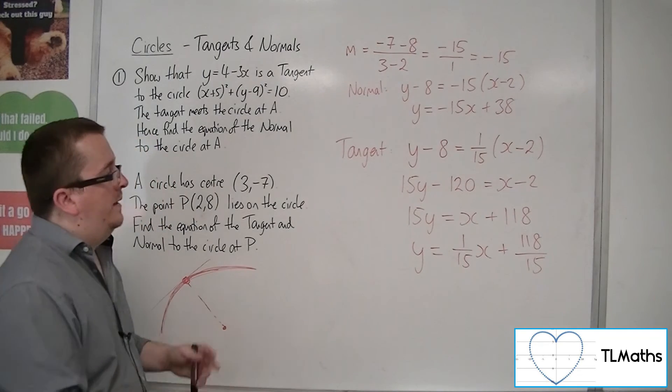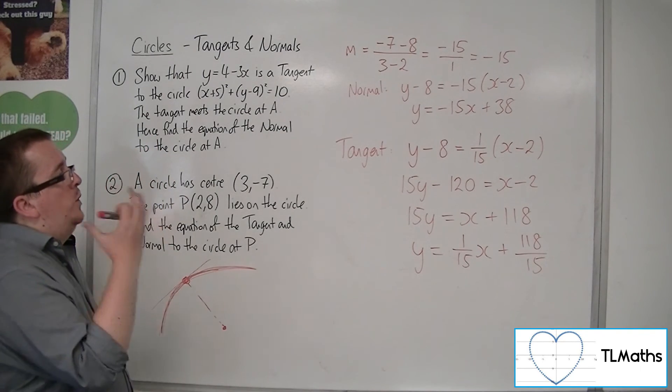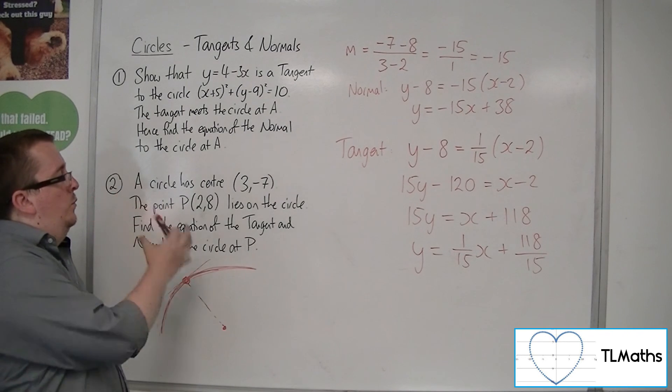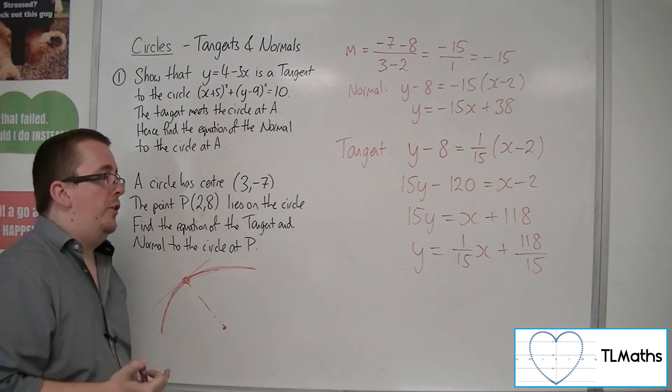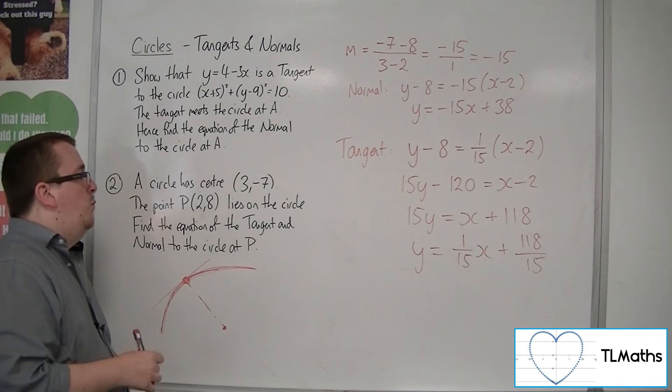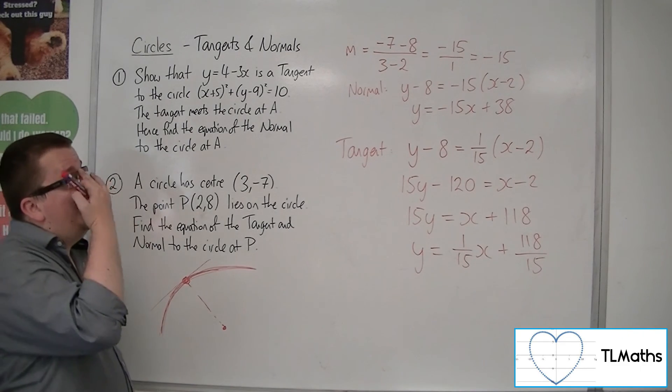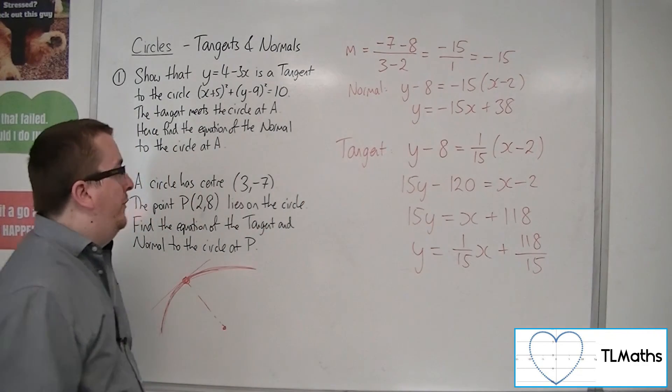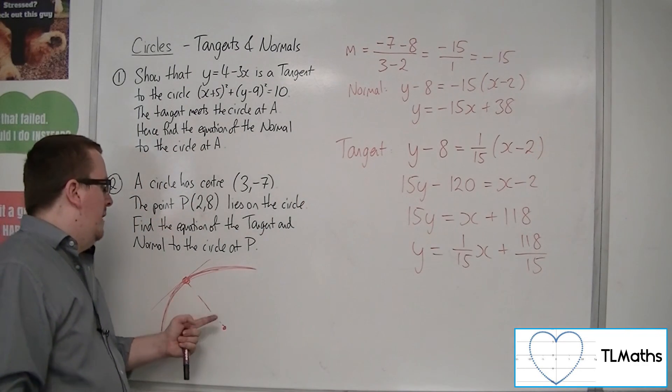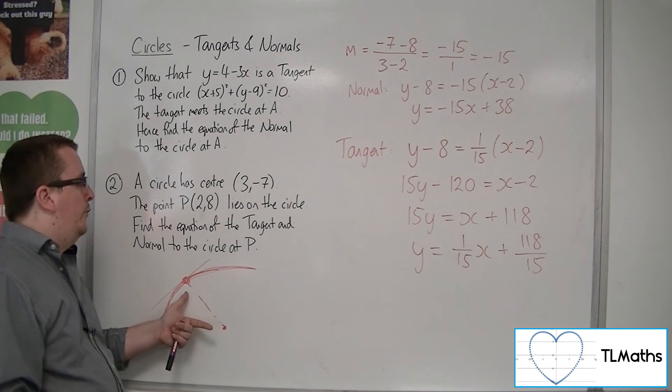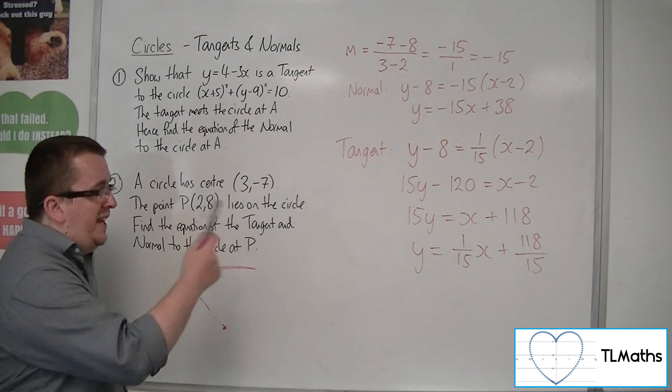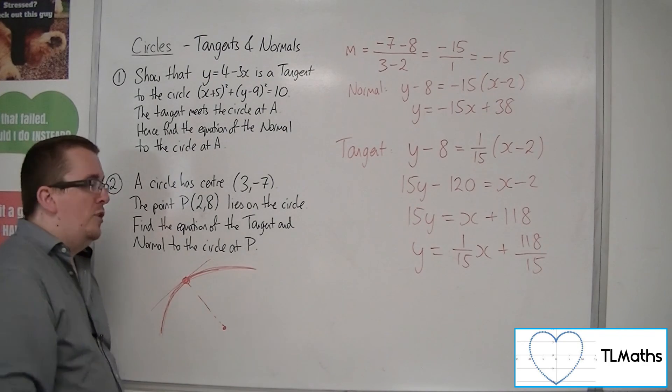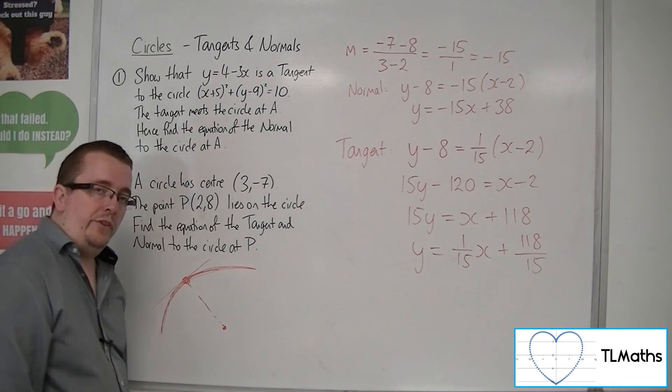And that is how to find the equation of the normal and the equation of the tangent when you're just given the centre and a point on the circle. So, beware that when I found the equation of the normal, I could use either that point or that point because the line goes through both of them. But remember, the tangent line does not go through both those points. It only goes through the point on the circumference of the circle.